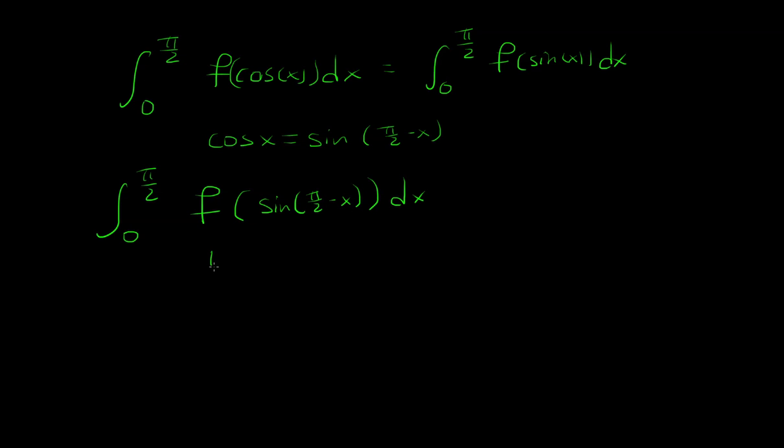And now we're going to let u equal π/2 minus x, and just make a substitution, and then du will equal negative 1 dx. So now when we evaluate the integral, we have f of sine u, and then we have a negative du, which the negative I'll just put outside.